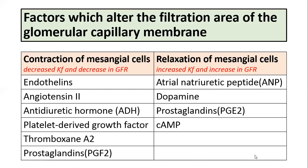The table shows the factors that alter the filtration area of the glomerular capillary membrane. Certain factors cause contraction of mesangial cells, decreasing the filtration area and thereby decreasing the filtration coefficient and GFR. These factors include endothelins, angiotensin II, antidiuretic hormone, platelet-derived growth factor, thromboxane A2, and prostaglandins such as PGF2.